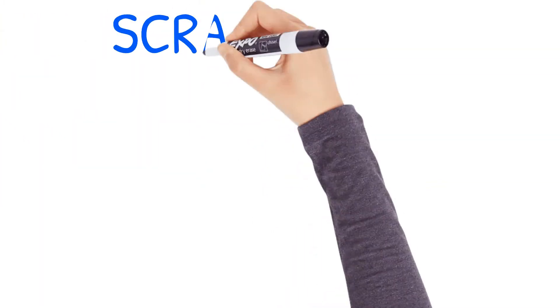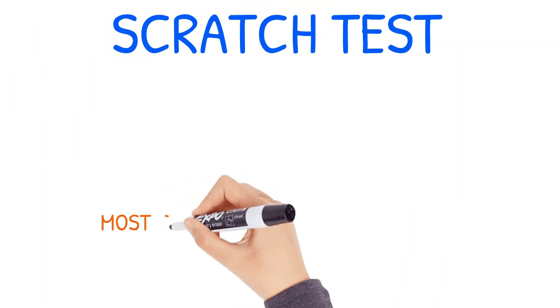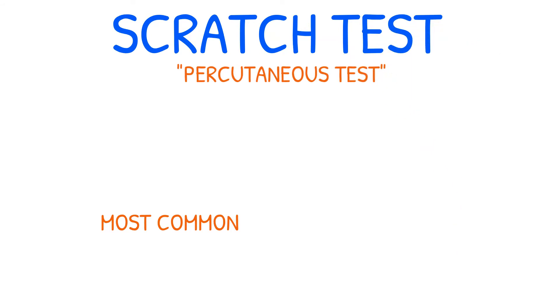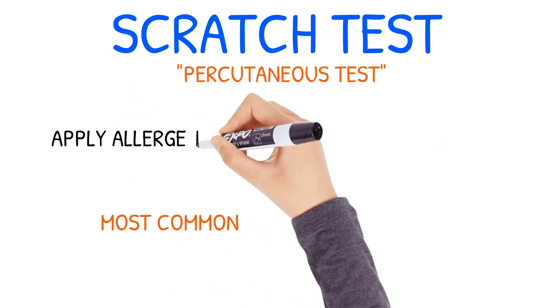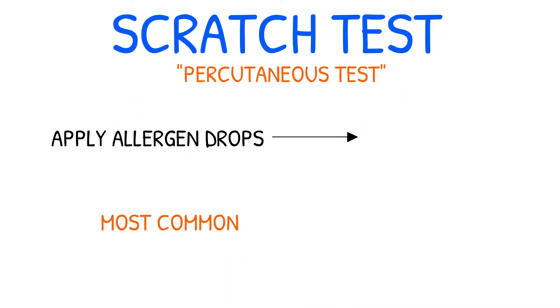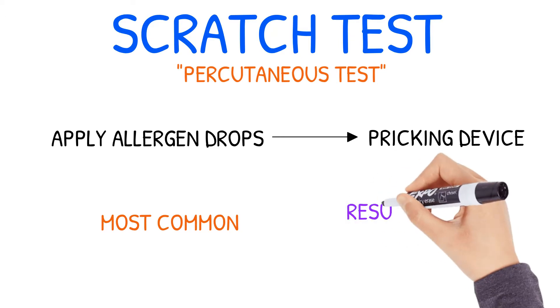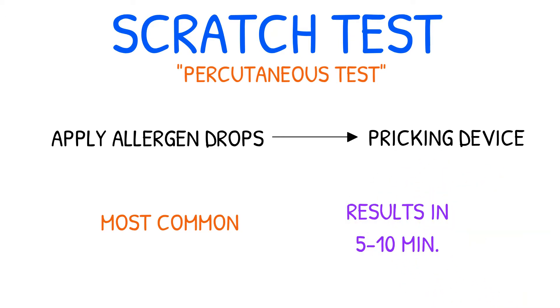The scratch test is the most common type of skin test and is also known as the percutaneous test. It entails placing drops of allergens onto the patient's skin and then using a pricking device so the allergens can enter the skin. The reaction occurs quickly so you'll be able to read the results in around five to ten minutes typically.